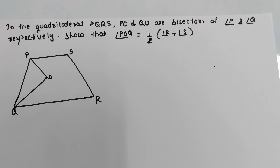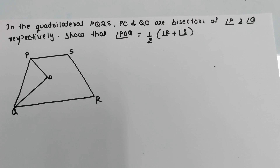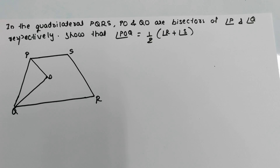Hello friends, welcome to my channel. Today's video is about this question: in the quadrilateral PQRS, PO and QO are the bisectors of angle P and angle Q respectively. Show that angle POQ is equal to half of angle R and S.